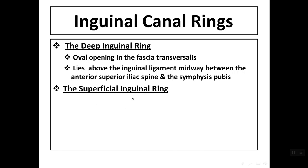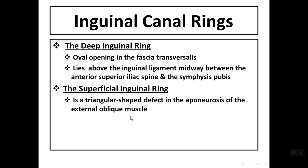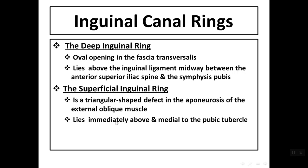The superficial inguinal ring is a triangular-shaped defect in the aponeurosis of the external oblique muscle. Its position lies immediately above and medial to the pubic tubercle.